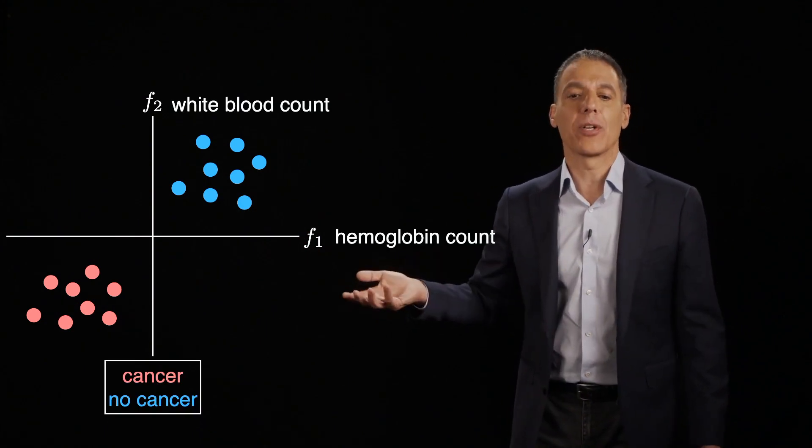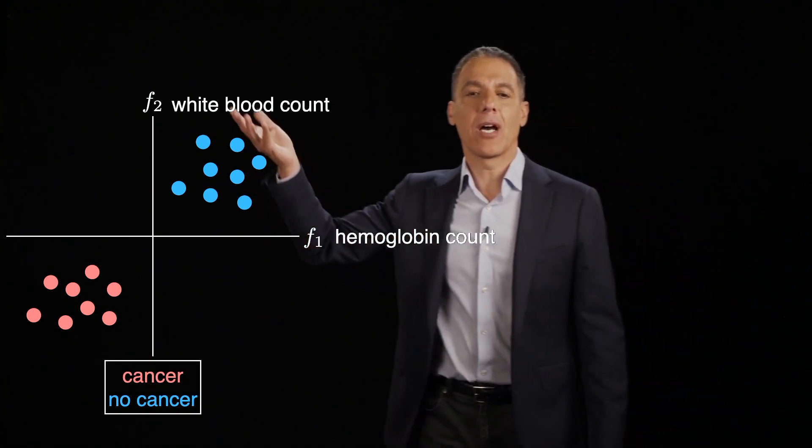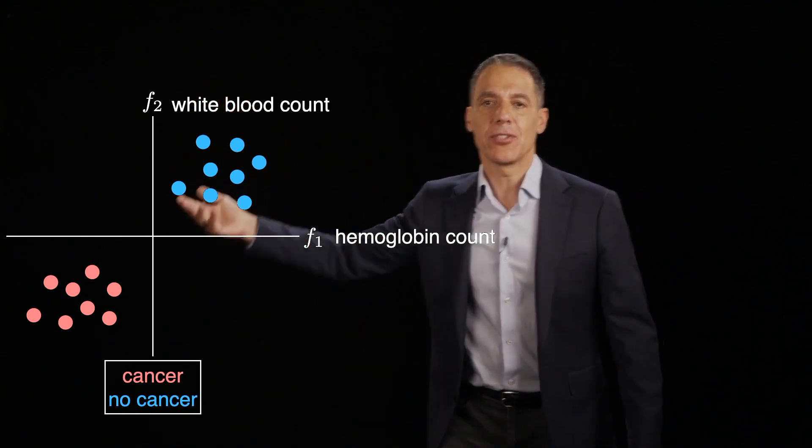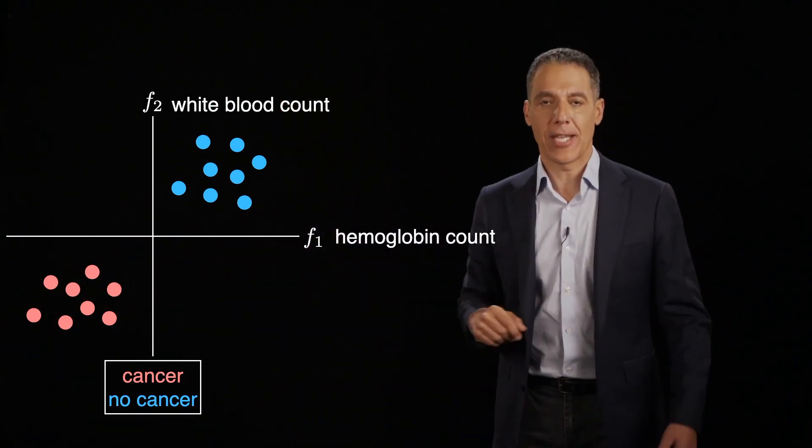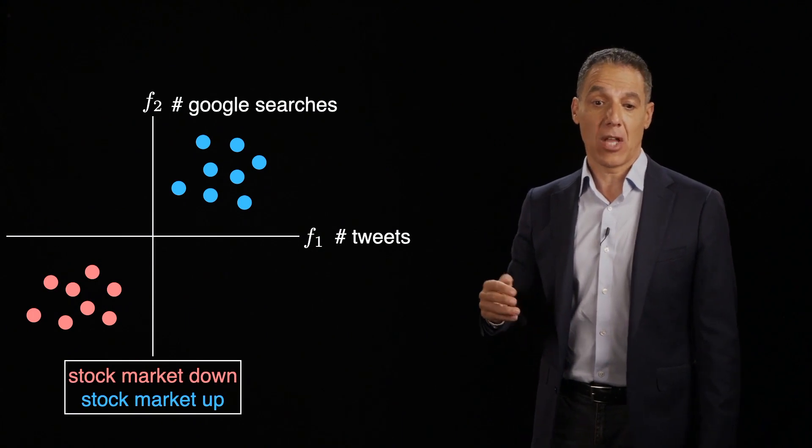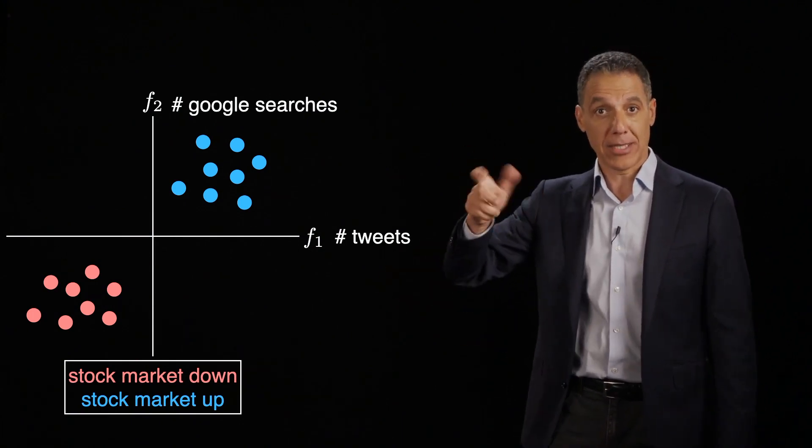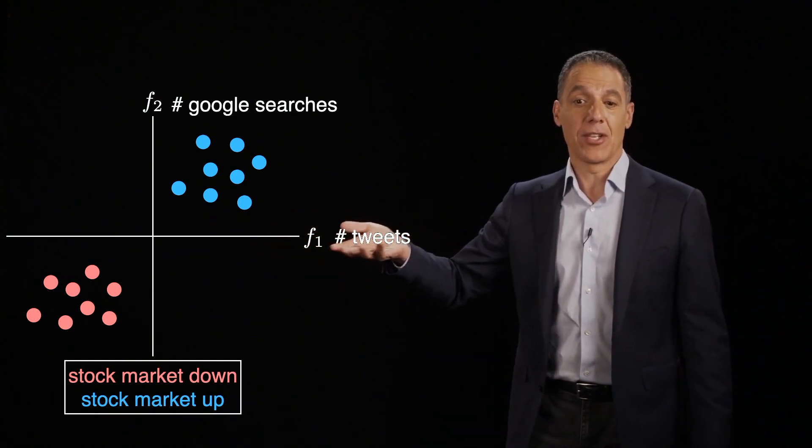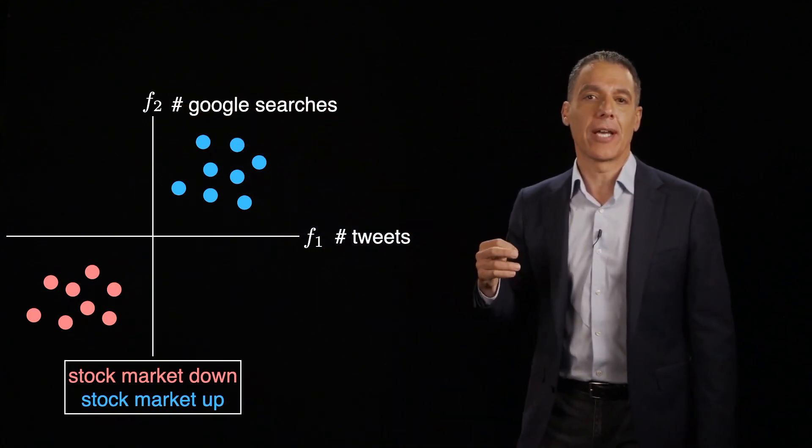The problem could be framed as, for example, one feature is a hemoglobin count, red blood cell count, and one is a white blood cell count, and I want to be able to distinguish people who have cancer from people who don't have cancer. Or it could be something like, I want to be able to predict if the stock market goes up or down, binary classification, based on the number of tweets and maybe the number of Google searches done on any given day.